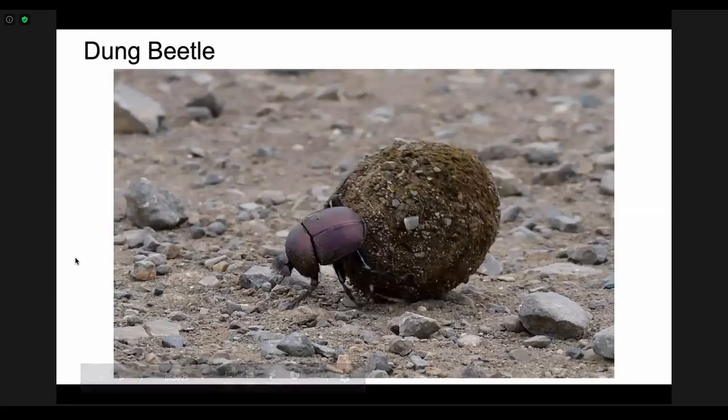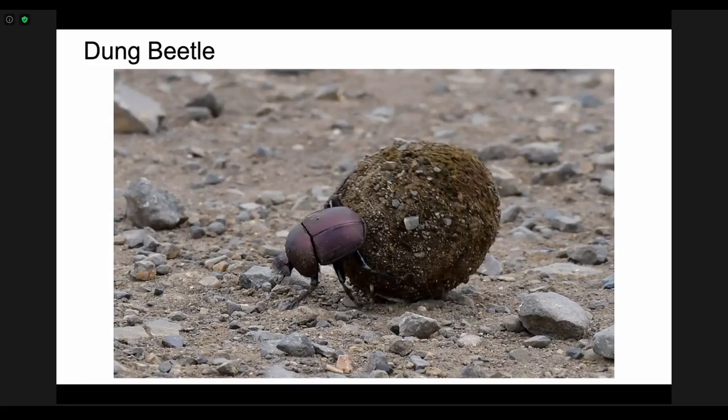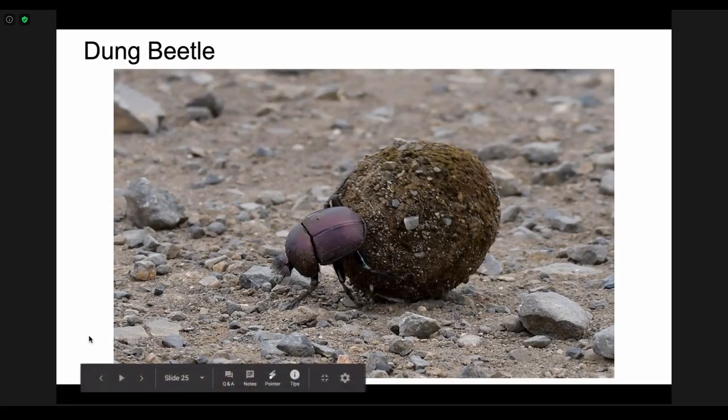Dung beetles, they do not want to, so this is their dung ball, they want to roll it in a straight line so they don't end up exactly where they came from. And so to make sure that they're rolling it in a straight line, they actually look at the brightest part of the sky, often the brightest part of the Milky Way, and then they just keep their eye on that brightest spot and keep heading towards that brightest spot in the sky to make sure that they're going straight.